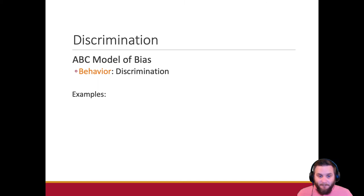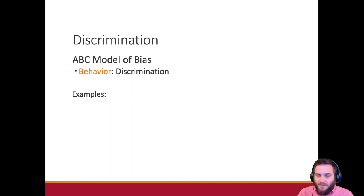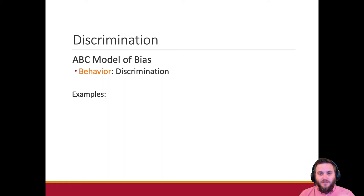This is the final piece of the ABC model of bias — we're at the B part: behavior. Stereotypes and prejudice manifest in behaviors that are related to discrimination, that are discrimination. The definition I want you to know is that discrimination consists of unjustified, negative or harmful actions toward members of groups because of their membership in that group. Plain and simple — a negative or harmful action toward someone just because of their membership in a group.